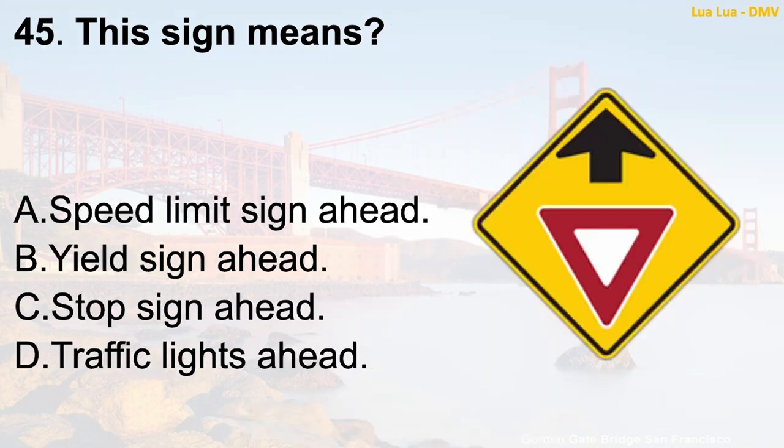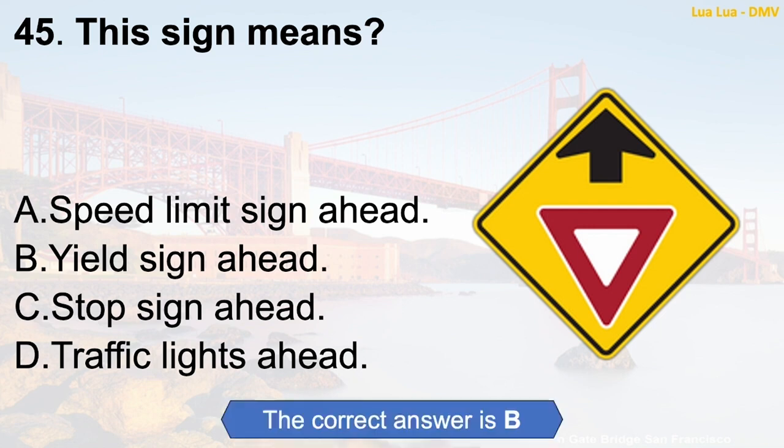Question 45: This sign means — A. Speed limit sign ahead. B. Yield sign ahead. C. Stop sign ahead. D. Traffic lights ahead. The correct answer is B: Yield sign ahead.